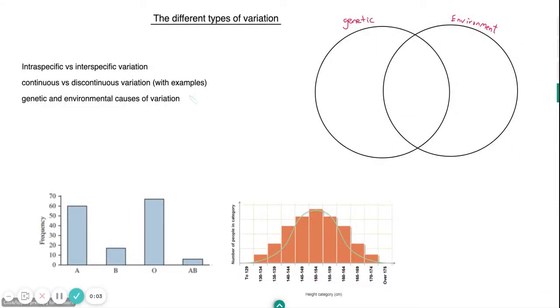For this one, we're talking about the different types of variation. We're going to go through intraspecific versus interspecific variation, continuous versus discontinuous variation with examples, and then we're going to look at some of the reasons for this.